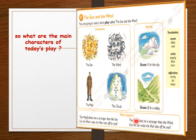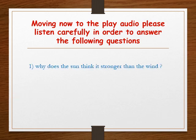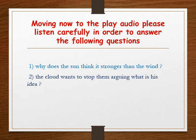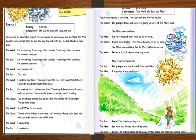What happens? The wind thinks that he is stronger than the sun. Can the wind make the man take off his coat? The sun thinks he is stronger than the wind. Can the sun make the man take off his coat? Now moving to the play audio. Please listen carefully in order to answer the following questions. The first question: why does the sun think it's stronger than the wind? The second question: the cloud wants to stop them arguing — what is his idea?